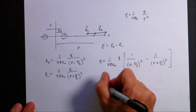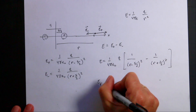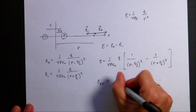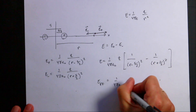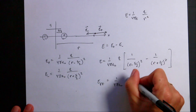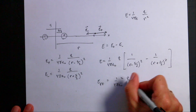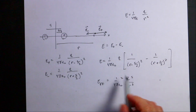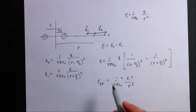The approximate far-field electric field, E_farfield, is 1 over 4π ε₀ times 2QS over R cubed. I'm going to plot both of these as a function of R and see what happens.